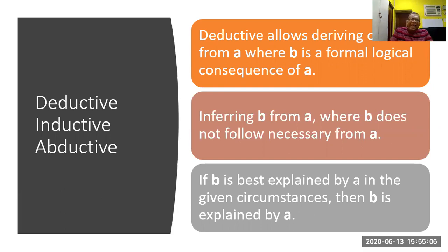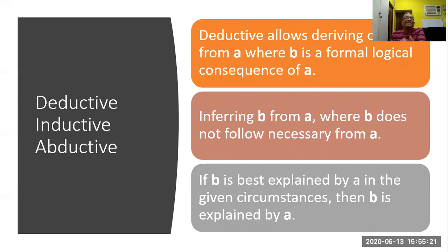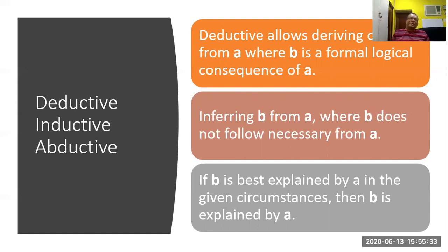In deductive reasoning, A is an absolute truth. From that, you derive B. Therefore deduction is an excellent way researchers use as a strategy to find what is happening in the world. The entire research process tries to reflect what is happening in the world in our research. Therefore, deduction is one of the best methods of doing it.